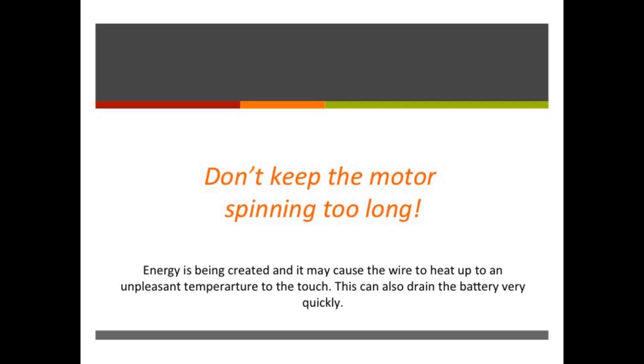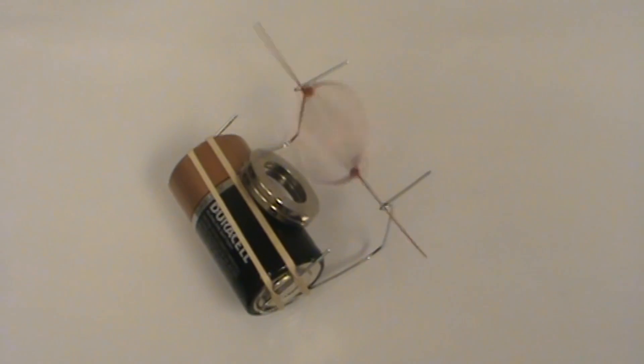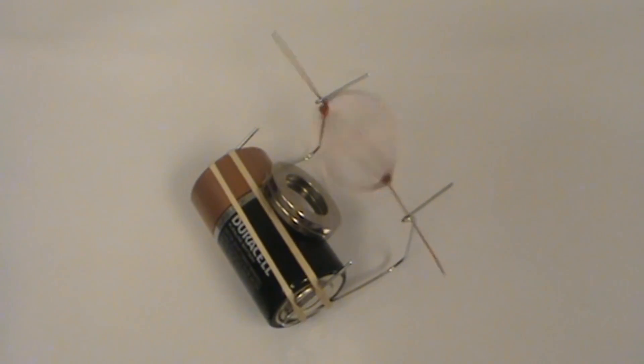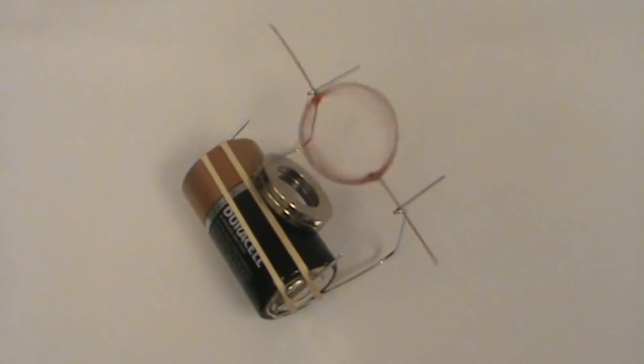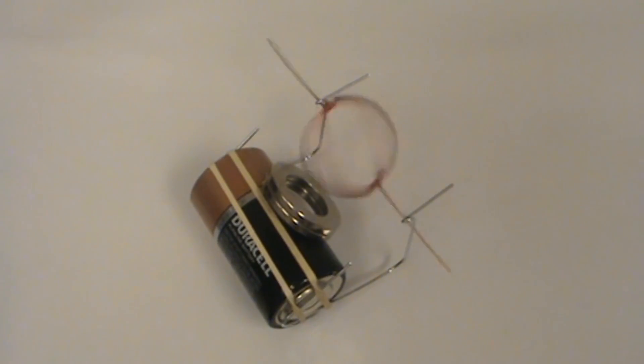Don't keep the motor spinning too long. Mechanical energy is being created by this force and this motion, and it may cause the wire to heat up to an unpleasant temperature to the touch. This can also drain the battery very quickly. So at this point, your motor should be working and your coil should be spinning or at least trying to spin. You might see it wobbling back and forth due to the force that's created.